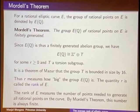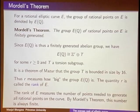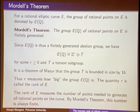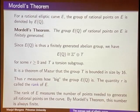The rank r essentially measures the number of points needed to generate all rational points via the group structure. Since T is bounded in size, and most of the time T is trivial, the rank r measures how many rational points you need to start with to generate all rational points through the addition law. In this lecture, I'm concerned with understanding how big r is on average.